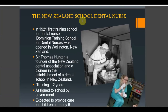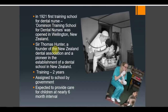It was started in New Zealand, so it was called the New Zealand school dental nurse. In 1921, the first training school for dental nurse — the Dominion Training School for Dental Nurse — was opened in Wellington, New Zealand. Thomas Hunter, a founder of the New Zealand Dental Association and pioneer in establishment of a dental school in New Zealand, is considered the father of school dental nurse. Training is for two years, and after training they are assigned to schools by the government.